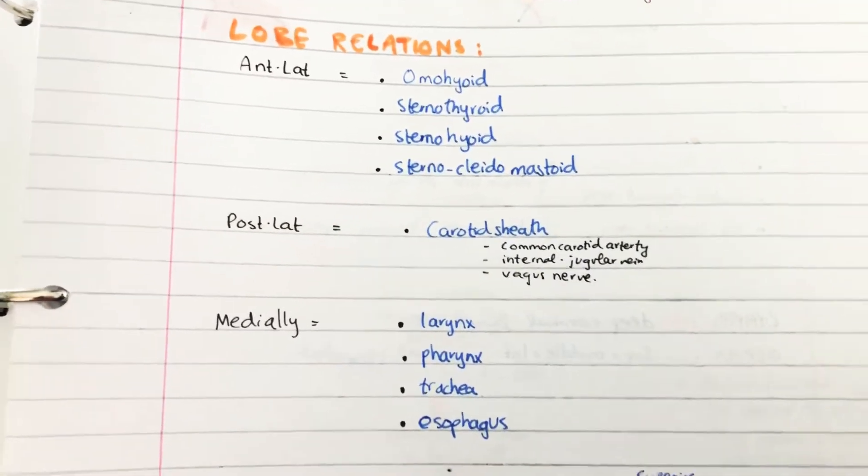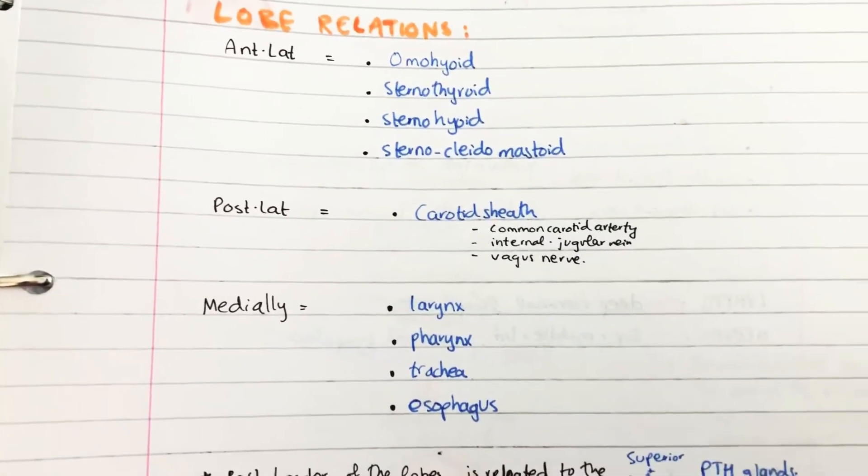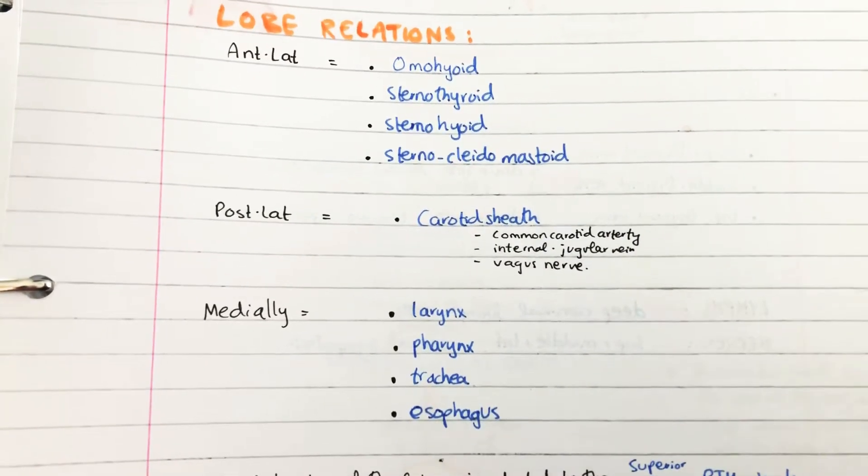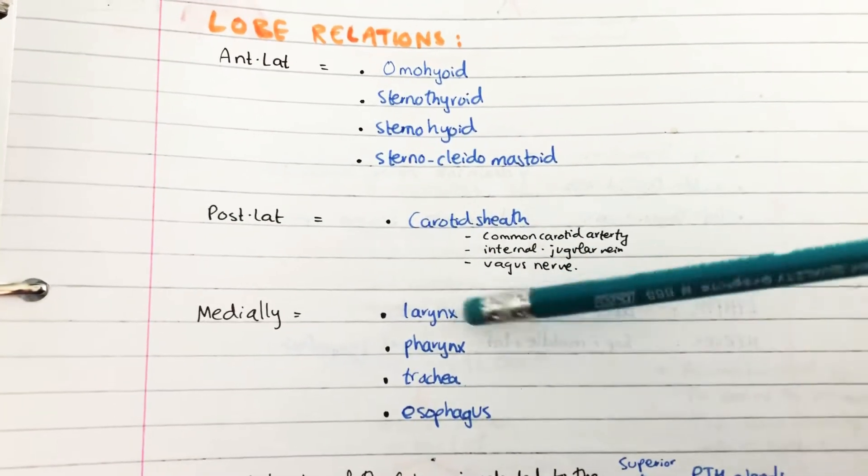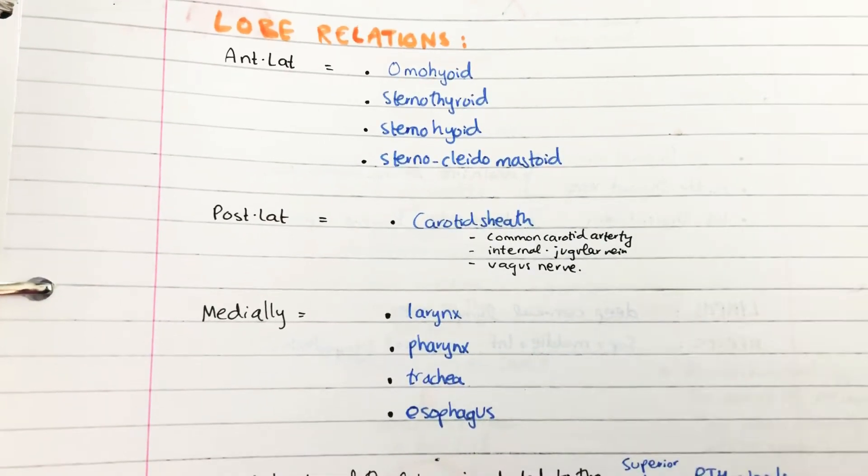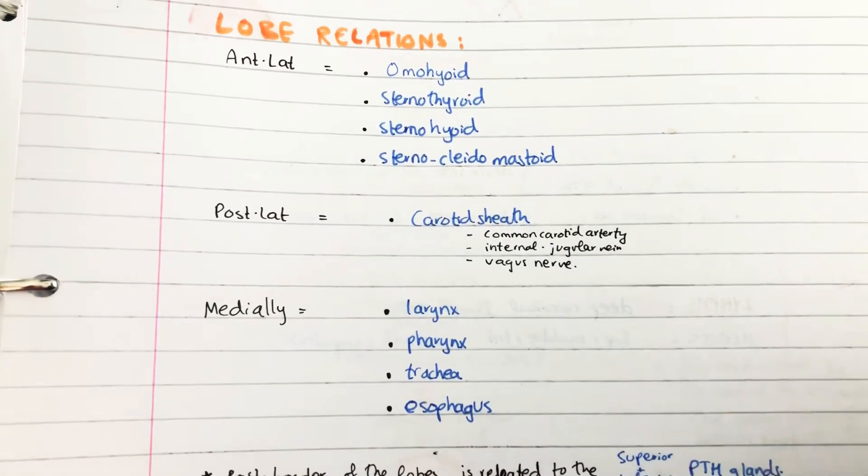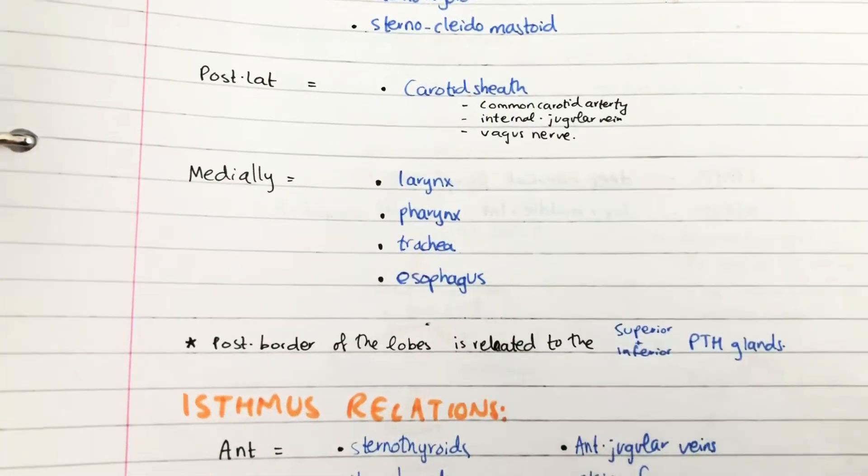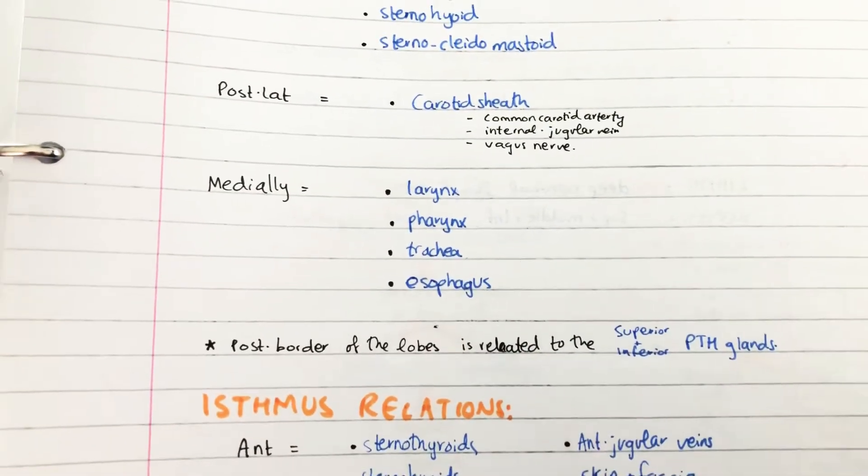Medially, now just think about where the thyroid is. It's in the neck, so what is in the neck? There's going to be the larynx, the pharynx, the trachea, and the esophagus. So the medial relationships are really easy. Just think about them for a second—it just makes sense.